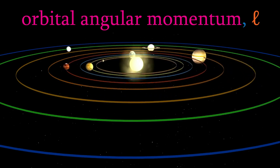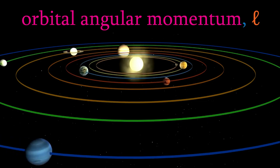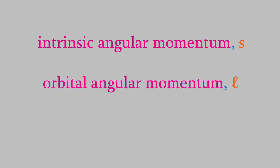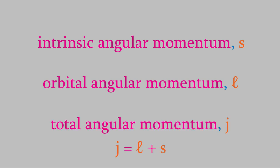So, an electron has two types of momentum: the spin angular momentum and the orbital angular momentum, and these are given by the quantum numbers s and l. When we add these, we get the total angular momentum of the electron, which is represented by the symbol j.